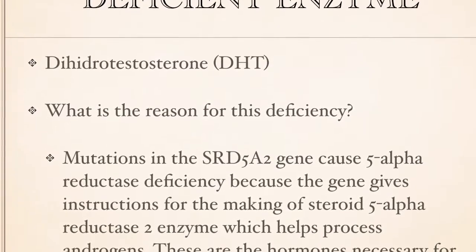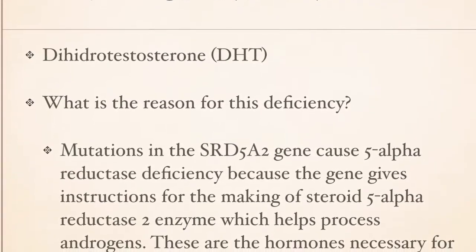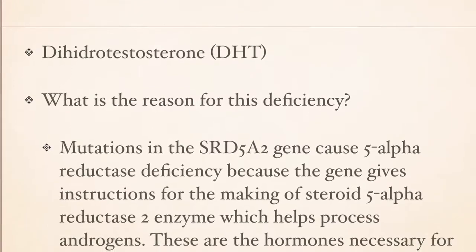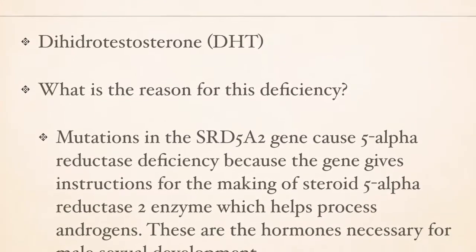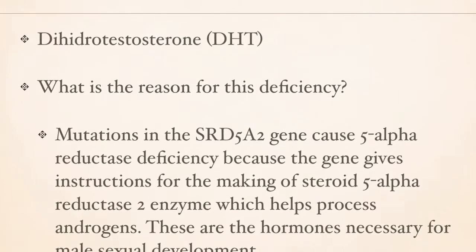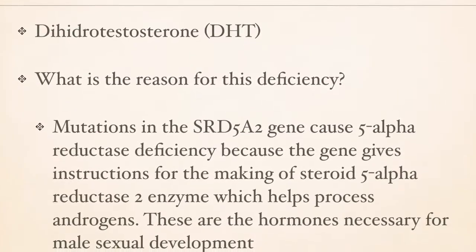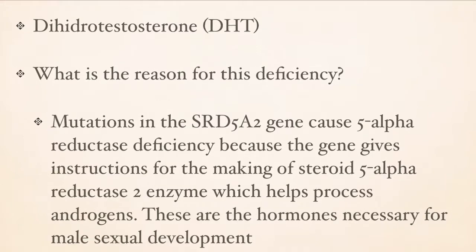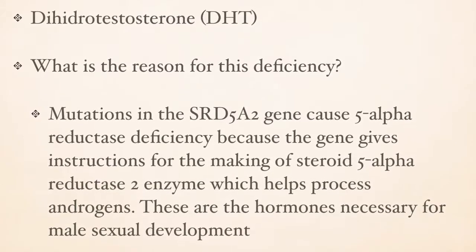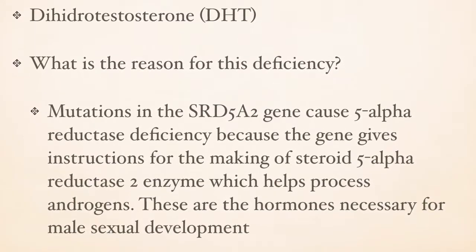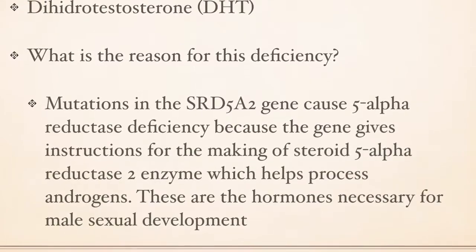What is the reason for the enzyme deficiency? Mutations in the SRD5A2 gene cause 5-alpha-reductase deficiency because the gene gives instructions for making a steroid 5-alpha-reductase 2 enzyme, which helps process androgens. These are hormones necessary for male sexual development.